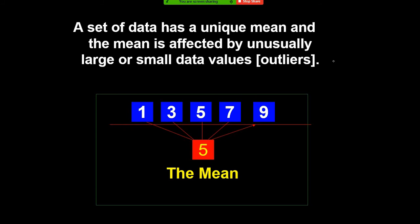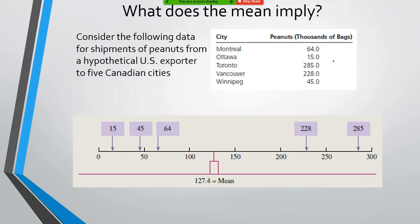Take note that a set of data has a unique mean, and the mean is affected by unusually large or unusually small data values that we call outliers. Take a look at this illustration: the mean of 5 numbers—1, 3, 5, 7, 9—is 5. If we remove 1 there, the mean would be 6. If we return 1, the mean goes back to 5. If we remove 9, the mean becomes 4. If we return 9, the mean becomes 5. If we remove 3, the mean becomes 5.5. And this nature of the mean being affected by extreme scores or outliers does have its advantages and disadvantages.